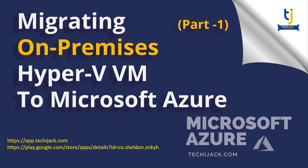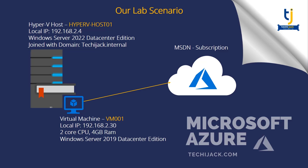Let's see our lab scenario. We have a Hyper-V host named Hyper-V-host01 with local IP address 192.168.2.4, with Windows Server 2022 Datacenter Edition installed, joined to the domain techyjack.internal. In this Hyper-V host, we have a virtual machine named VM001 with IP address 192.168.2.30, configured with two-core CPUs and 4GB of RAM, with Windows Server 2019 Datacenter Edition installed. I am using my MSDN subscription for this demonstration, and our plan is to migrate VM001 to Microsoft Azure.